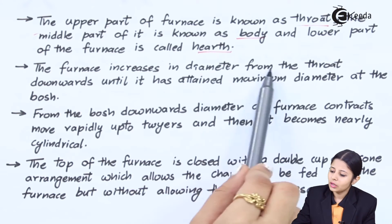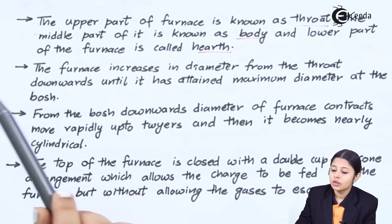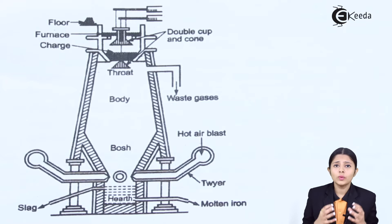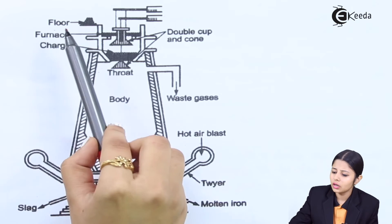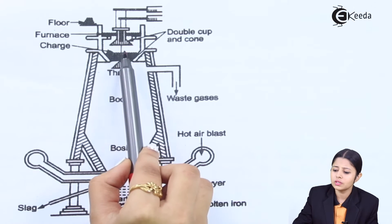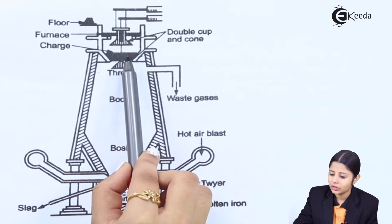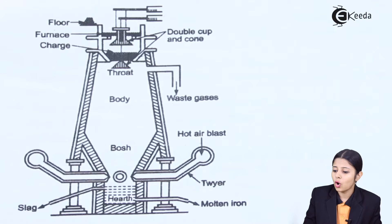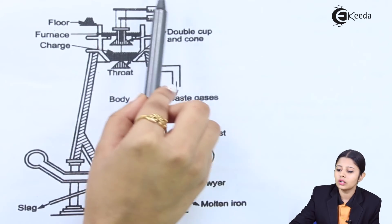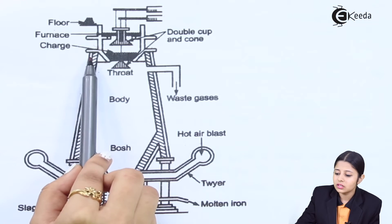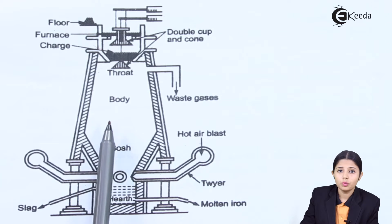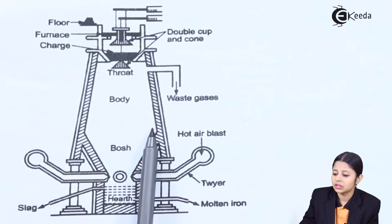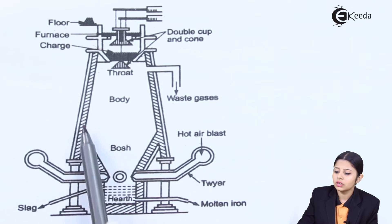The furnace increases in diameter from the throat downward until it attains the maximum diameter at the Bosch. The maximum diameter is at the Bosch because the charge — ore, coke, and flux — enters through the throat, comes down through the body, and the maximum amount of reactions happen at the Bosch area. Having the maximum diameter here gives equal space and time for the reactions to happen. The charge needs time to come down below the body before reacting, as it cannot react near the throat where it is exposed to the atmosphere.